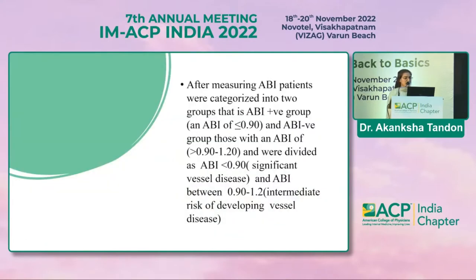After measuring ABI, patients were categorized into two groups: ABI positive, having an ABPI value of less than or equal to 0.9, and ABI negative. Within ABI negative, I further subcategorized into two groups: between 0.9 and 1.2, and more than 1.2. The basic aim was to include patients at intermediate risk of developing vessel disease, having an ABPI value between 0.9 and 1.2.